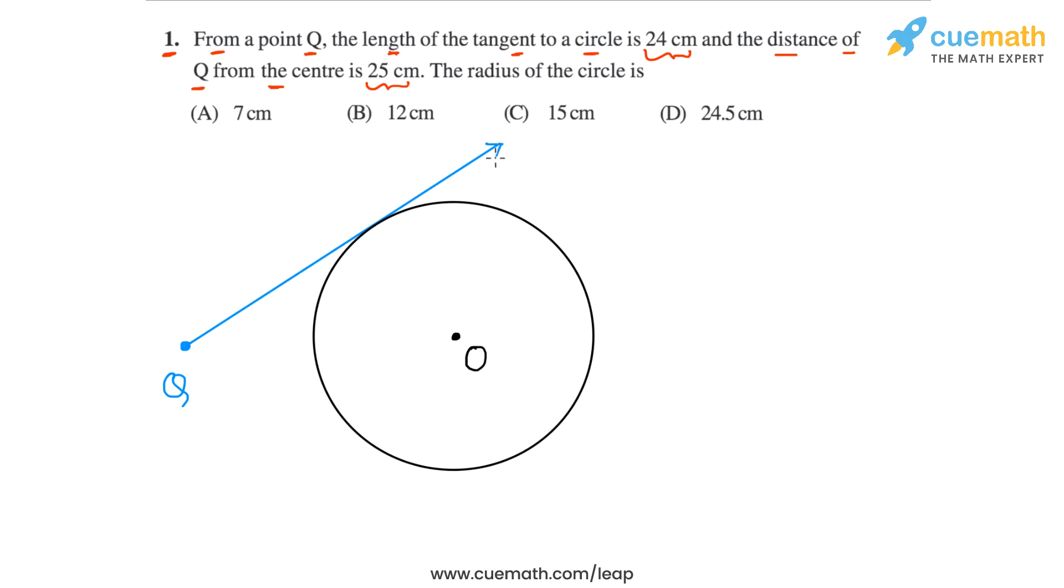And let's say that the point of contact of the tangent is P. So we are told that the length of the tangent is 24 centimeters, so this means that PQ, this length is 24 centimeters. And the distance of Q from the center is 25 centimeters, so if we join Q and O, the length of this segment OQ is 25 centimeters.